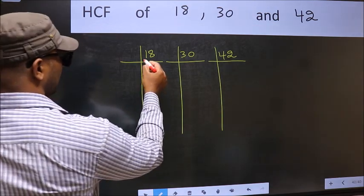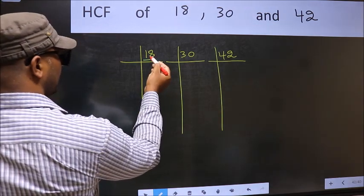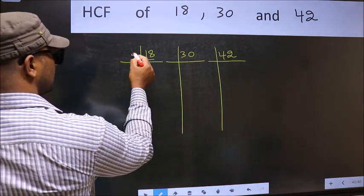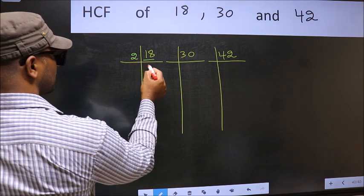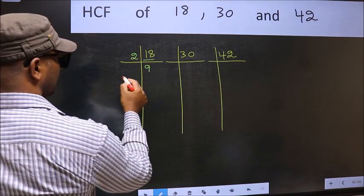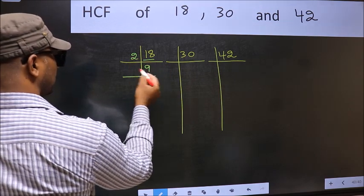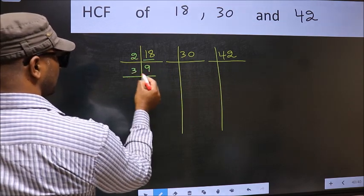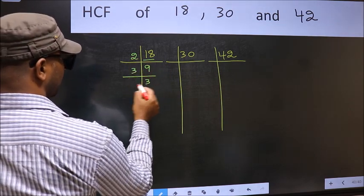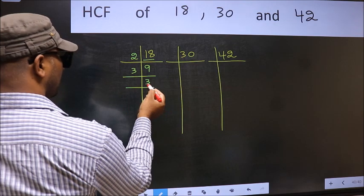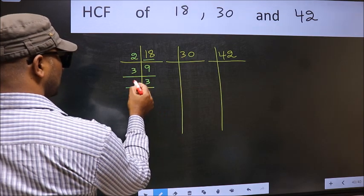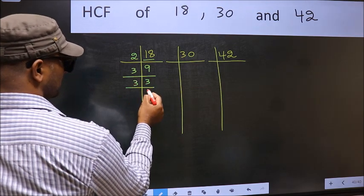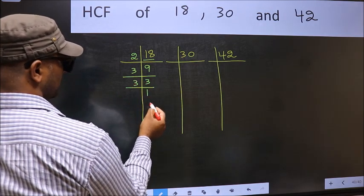Here we have 18. 18 is 2 times 9, giving 18. Now 9 is 3 times 3, giving 9. Now 3 is a prime number, so 3 times 1 is 3.